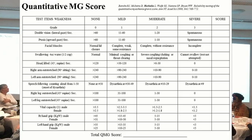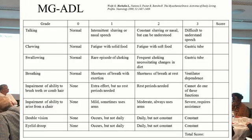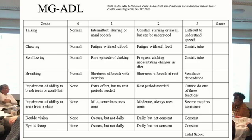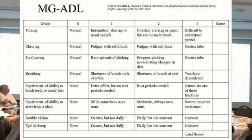There are scoring systems developed to quantify how bad MG is, mainly used in research studies. One is called the Quantitative MG Score, administered by a nurse or physical therapist — the higher the score, the worse the MG. The other, which we developed, is the MG Activities of Daily Living Score. Patients can do this on their own, and the Myasthenia Gravis Foundation of America has made it into an app.